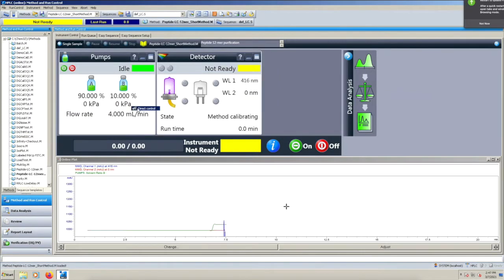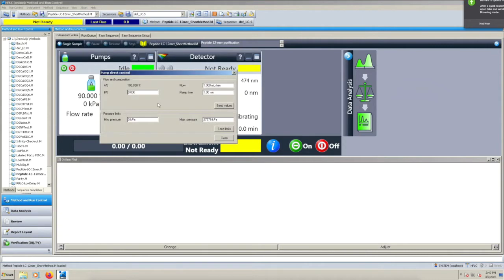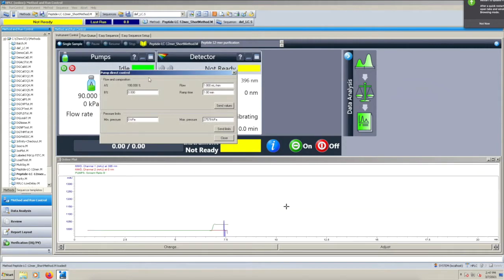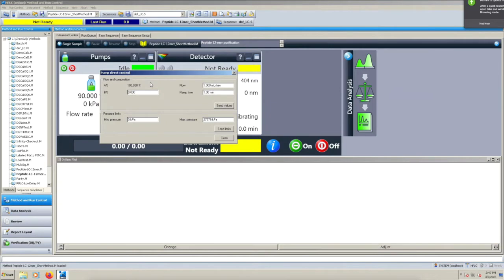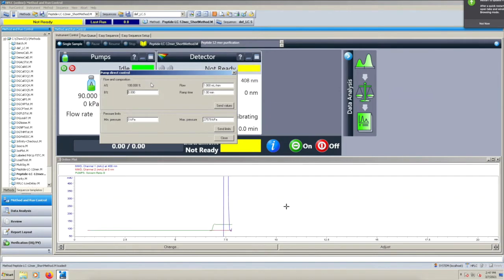The flow may increase significantly at this point, so right click anywhere in the pump window and select direct control. Bring the flow up to 80% B, which is acetonitrile again, at 4 mls per minute over a 0.5 minute time frame and click send values, which will send the values to the pump.